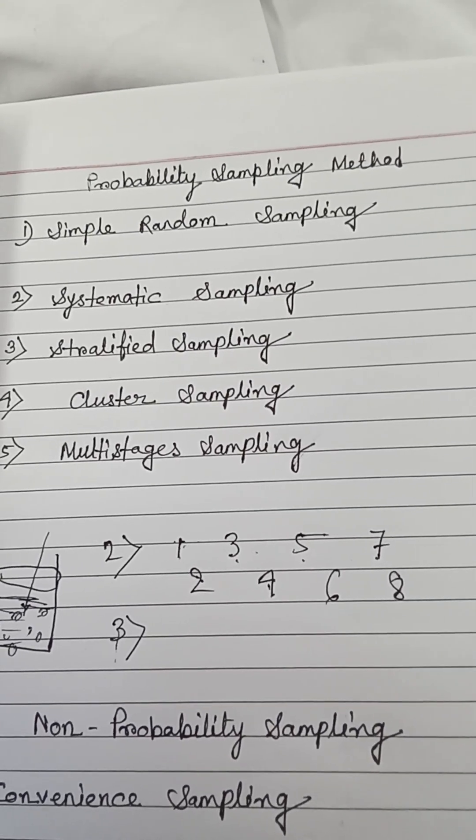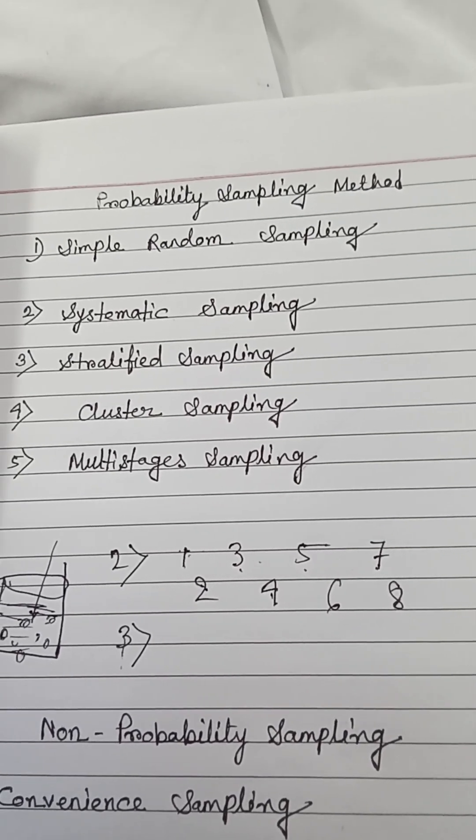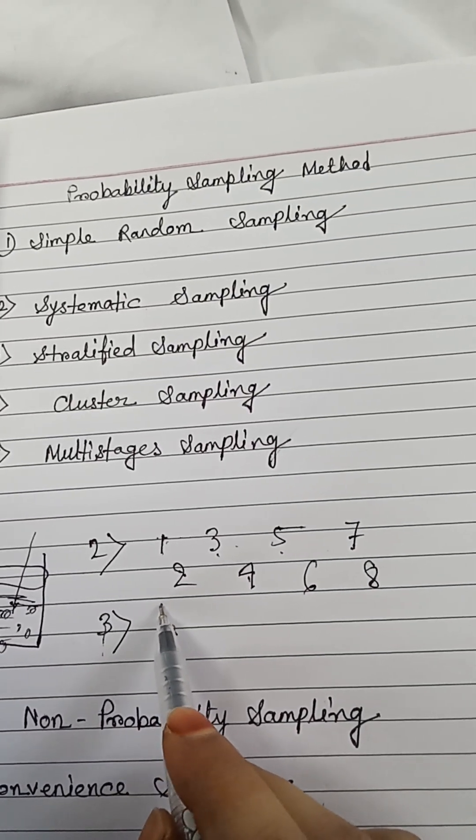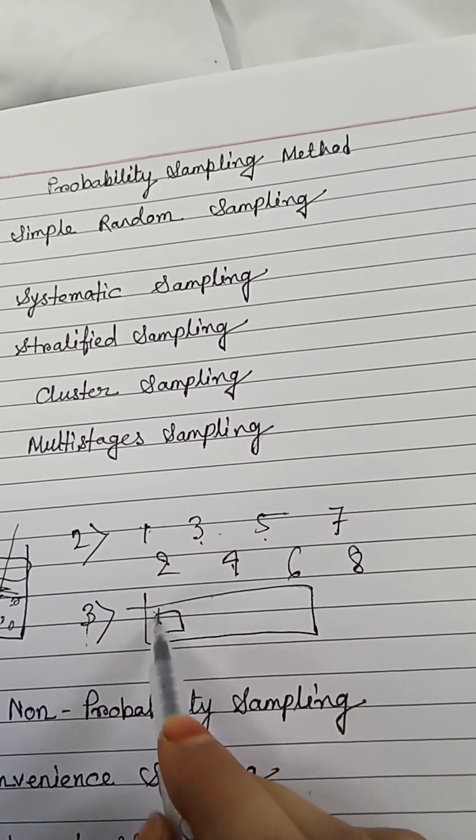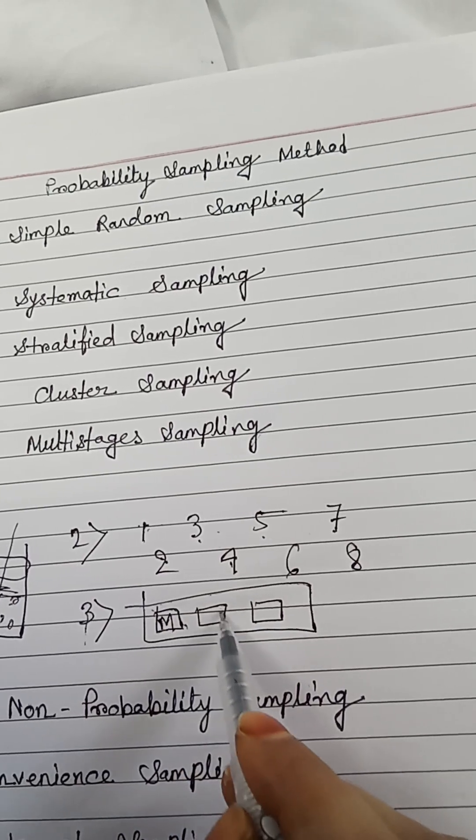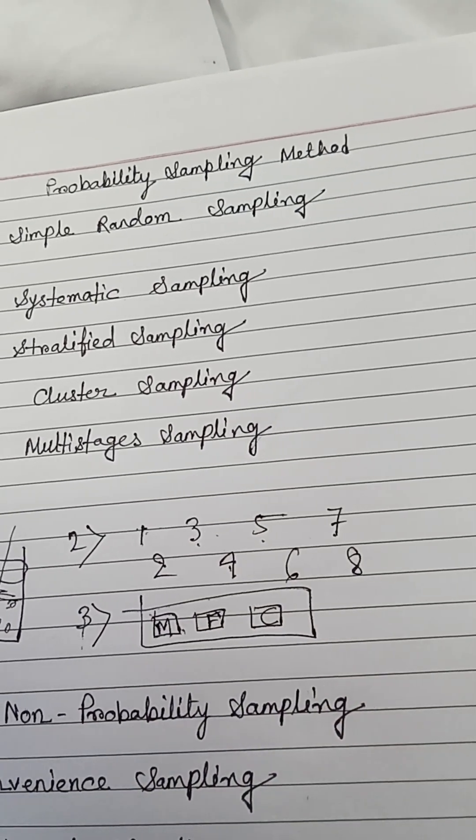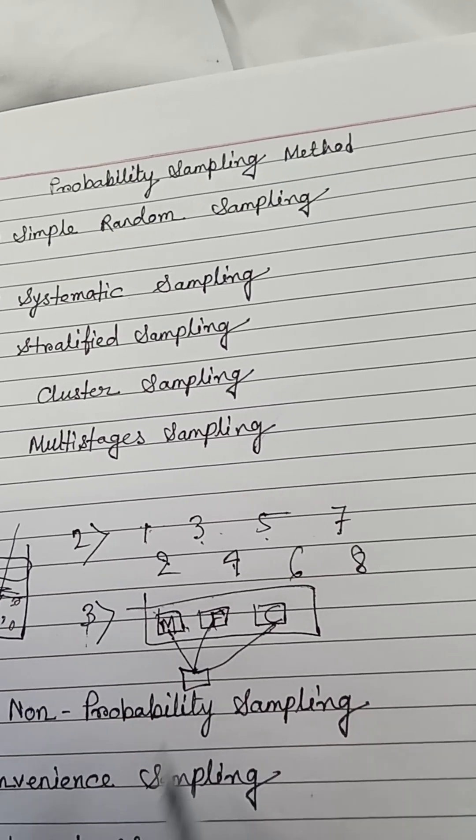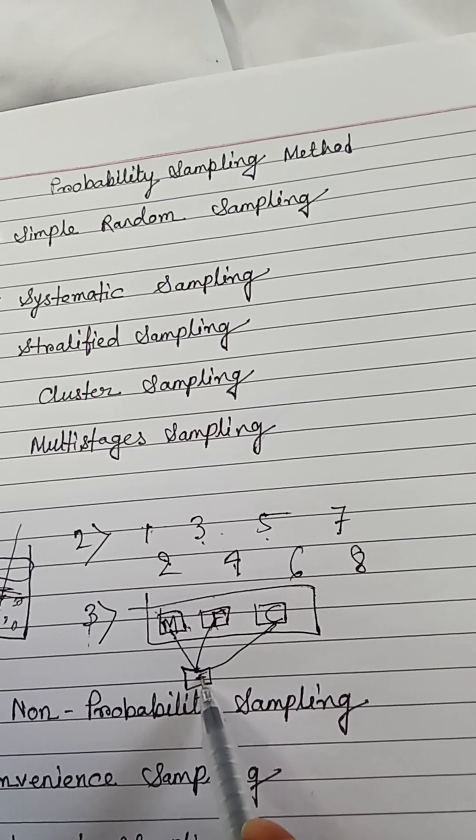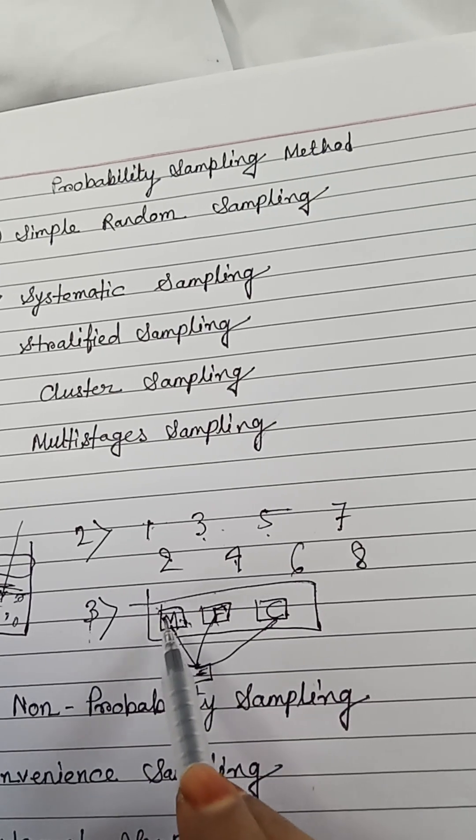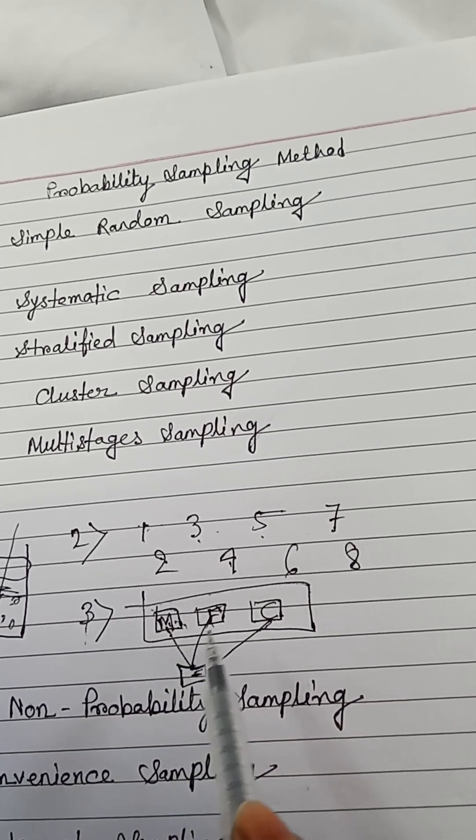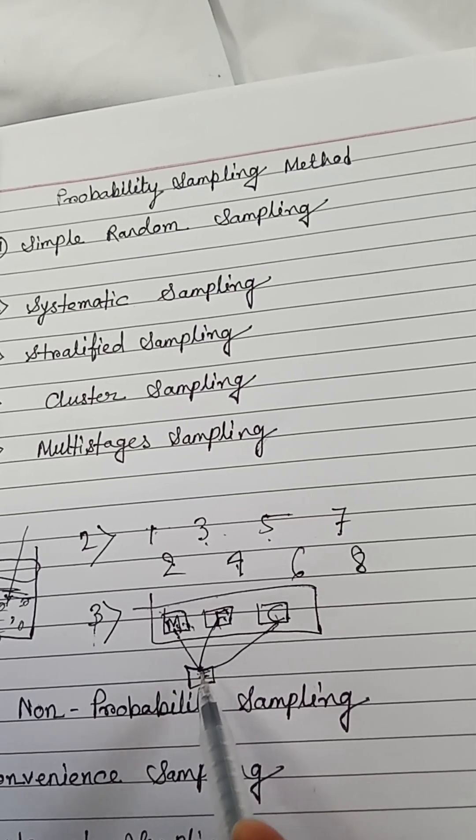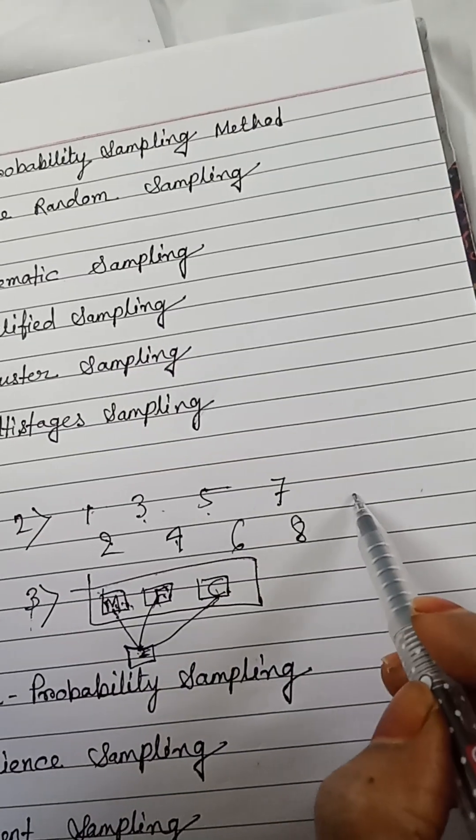Now number three, that is stratified sampling. It's a little bit confusing but I'm trying to make it clear. Stratified means like there is a room and you make three groups: male, female, and children. Now you are taking one male, one female, one children, and you are doing your research. This is called stratified sampling. It means here they are homogeneous - male only male, female only female, children only children - but here it is heterogeneous.